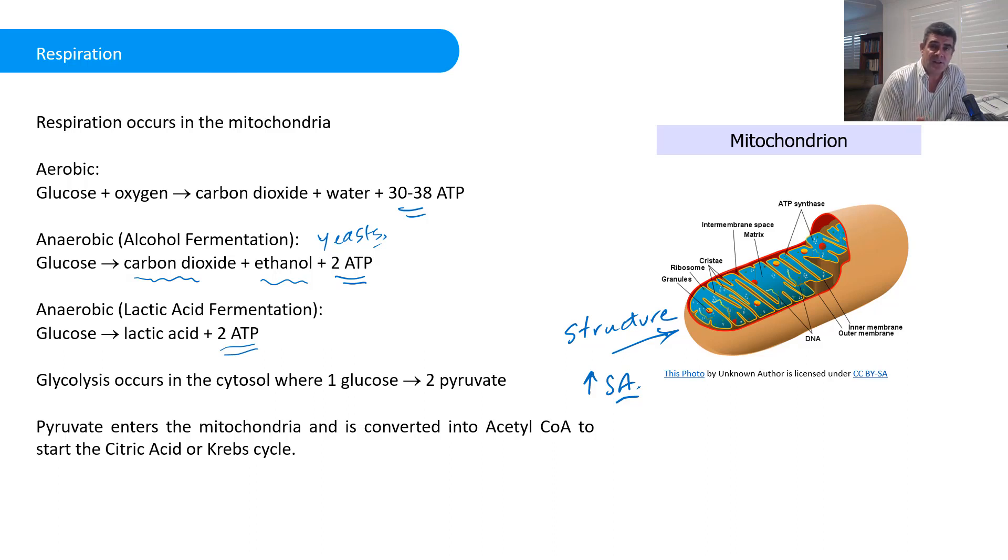The glucose itself doesn't actually enter the mitochondria for the process of respiration. What happens is glycolysis happens first, and that happens in the cytosol. That's part of the cytoplasm where one glucose molecule will be broken down into two pyruvate molecules. These are three carbon molecules, the pyruvates, and they will be transported into the mitochondria where the first thing that will happen to them is they'll be converted, they'll release a carbon dioxide and be converted into a two carbon complex with the acetyl coenzyme A.